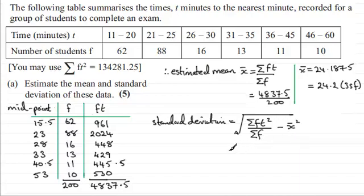So we just need to fill in our values here. We've got then the square root of 134281.25. It was given up here, it's divided by the total frequency, which is 200. And then minus the mean, we'll take the unrounded version here, 24.1875. That's squared.